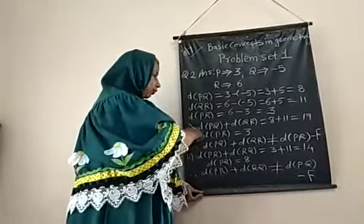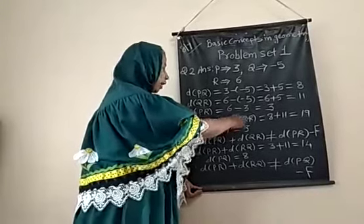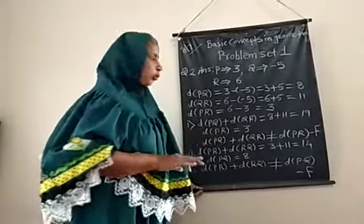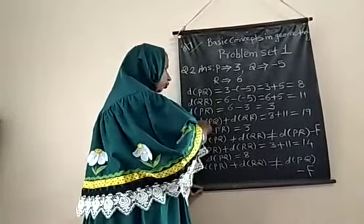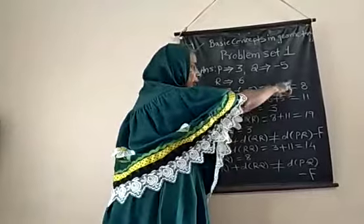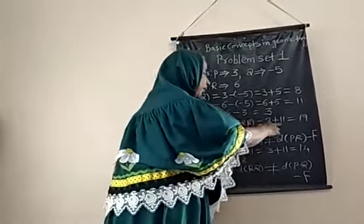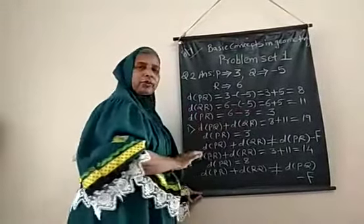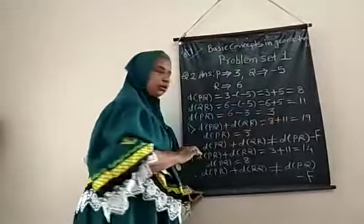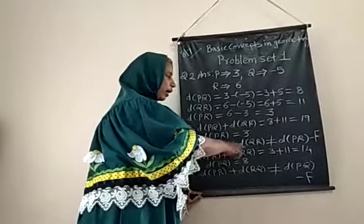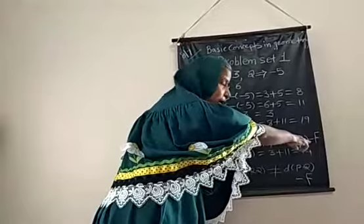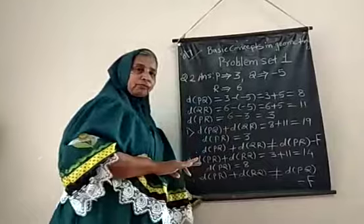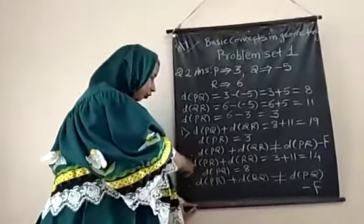We find all three distances and then check whether the given statements are true or false. The first statement asks whether distance PQ plus distance QR equals distance PR. Adding eight plus eleven gives nineteen, and distance PR is three. Nineteen is not equal to three, so the first statement is false.